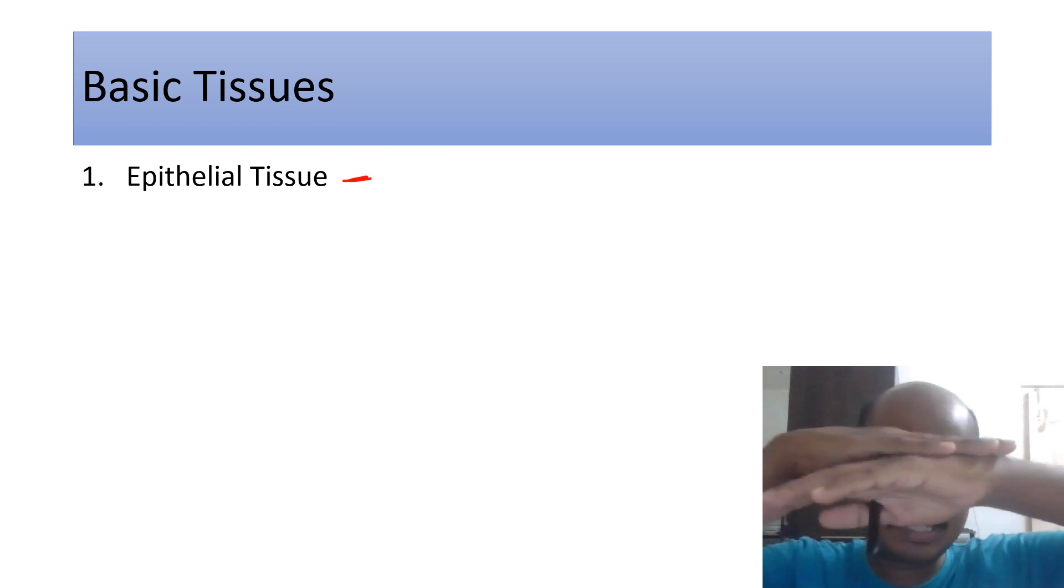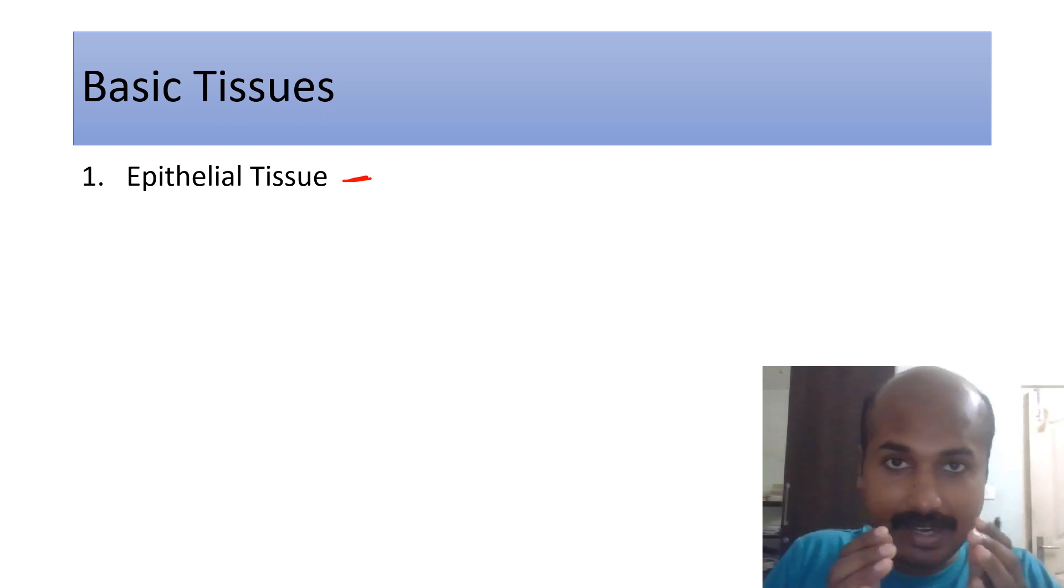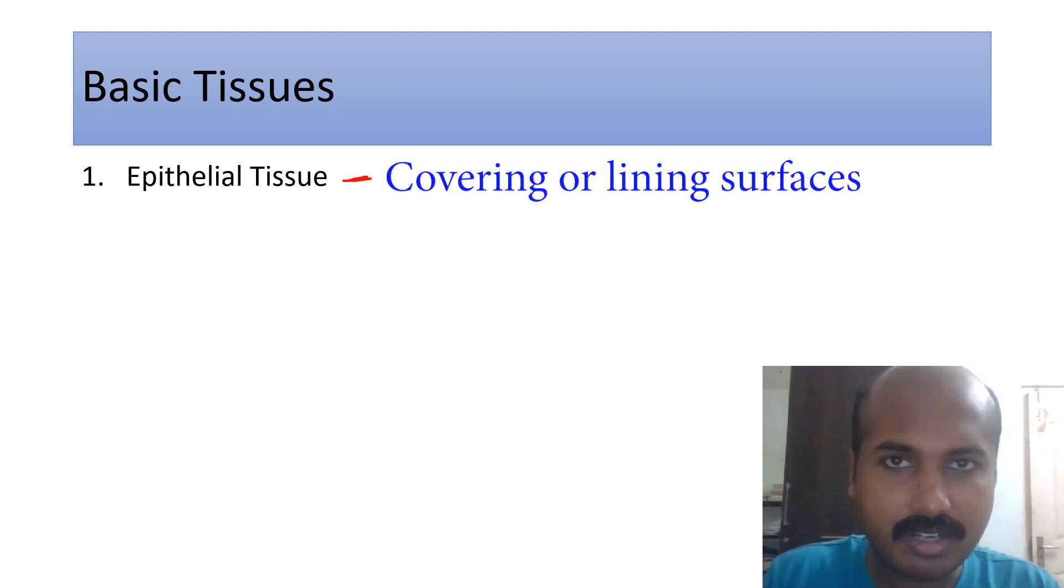For example, this is my skin, so it covers the skin. Epithelium covers the skin, but you can also consider the oral cavity or the cavity of the esophagus or stomach. Inside that cavity, the epithelium will be lining. So epithelial tissue is something that will be covering or lining surfaces.